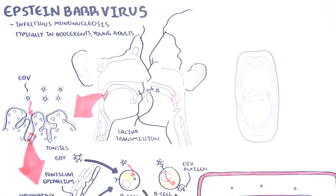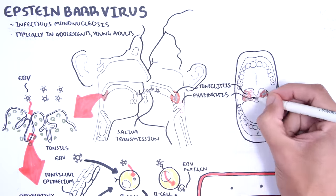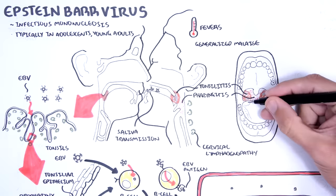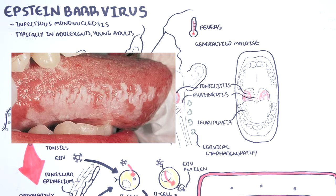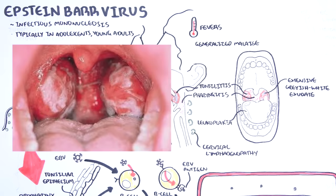The clinical features of infectious mononucleosis include tonsillitis, pharyngitis, fevers, generalized malaise, lymphadenopathy, hepatosplenomegaly, and leukoplakia. Here is an image of a tongue with leukoplakia — note the whitish-grayish patches on the side of the tongue. The tonsils are typically covered with an extensive grayish-white exudate and can be so large they compress the airways. Here is a photograph of someone with infectious mononucleosis showing pharyngotonsillitis with white-grayish exudate and enlarged tonsils.